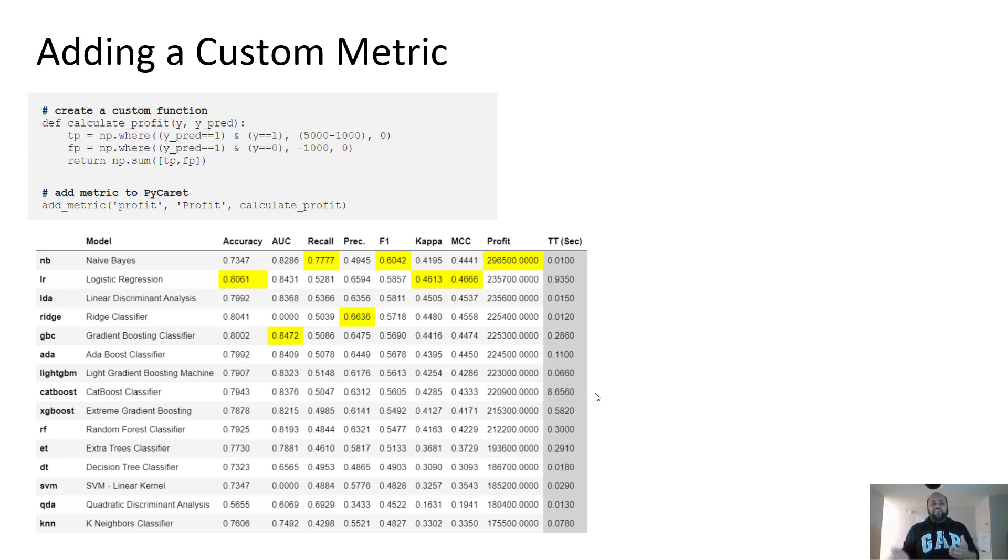What you can do in PyCaret is actually write this two lines of code and pass that intelligence to add metric function. And now if you notice, there's the same table except that we have a new column here, profit. And if you notice, this is now our best model based on profit, which is naive Bayes. And our best model based on AUC, which is gradient boosting classifier is now number fifth. So now I'm making a right decision in terms of choosing a model that matters most to the business.